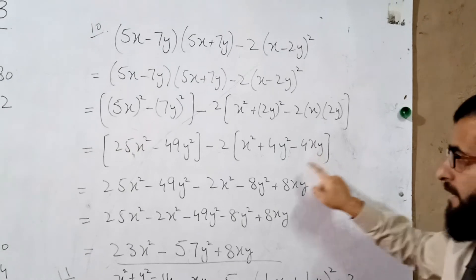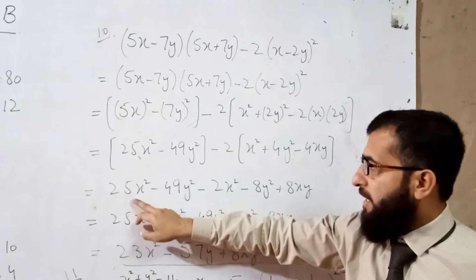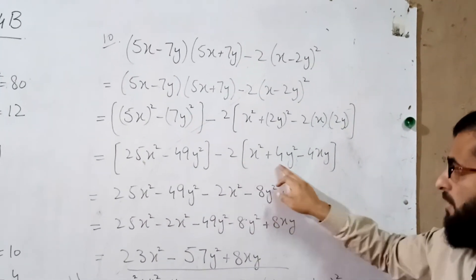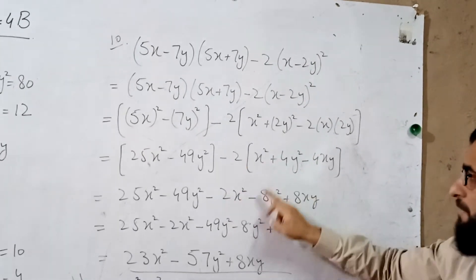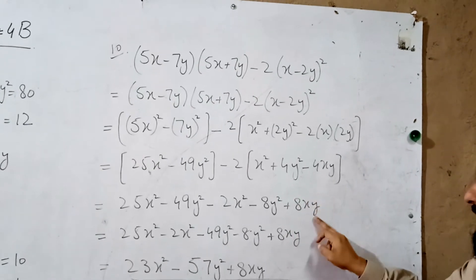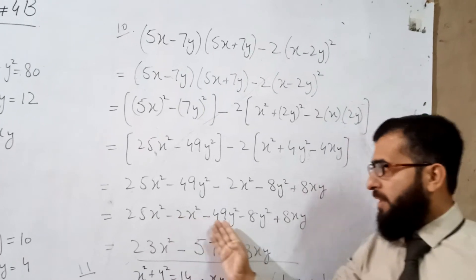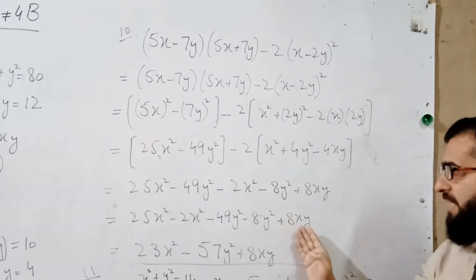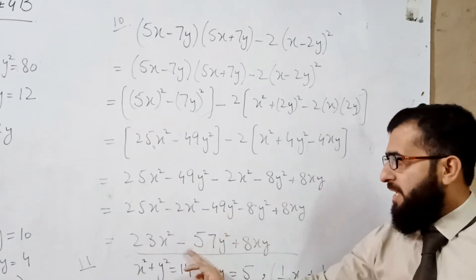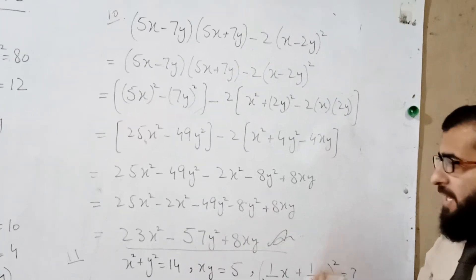Now arrange the values: 25x² − 49y² − (2x² + 8y² − 8xy). Opening the bracket: 25x² − 2x² = 23x²; −49y² − 8y² = −57y²; and +8xy. The final answer is 23x² − 57y² + 8xy.